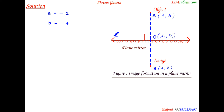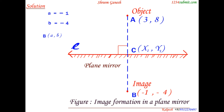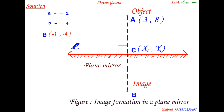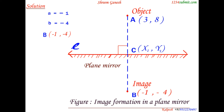So the coordinates of image point B of point object A are (−1, −4).